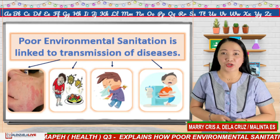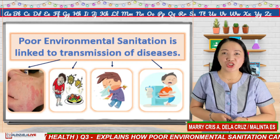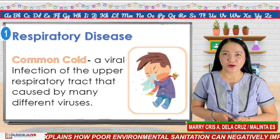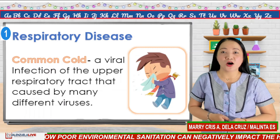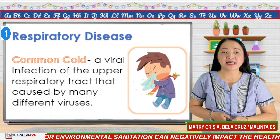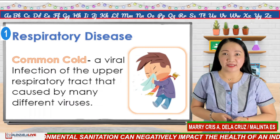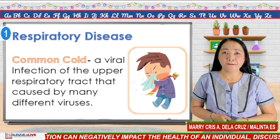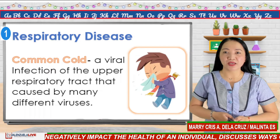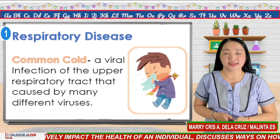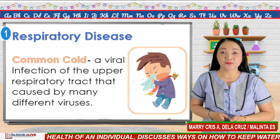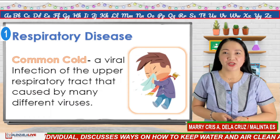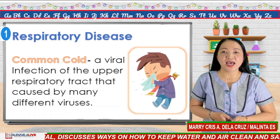Some diseases and disorders due to poor sanitation are: number one, respiratory disease — this is one of the most common sicknesses that is an effect of poor environmental sanitation. The common cold is a viral infection of the upper respiratory tract caused by many different viruses. The symptoms are runny nose, sneezing, nasal congestion, watery eyes, and mucus drainage.